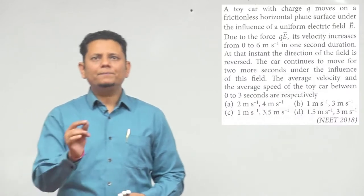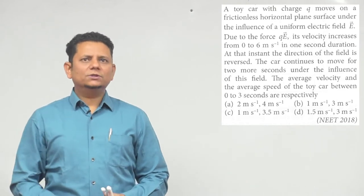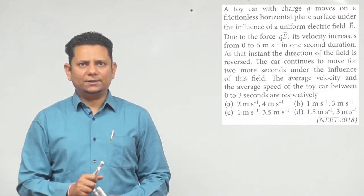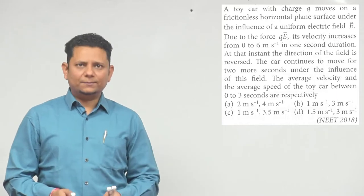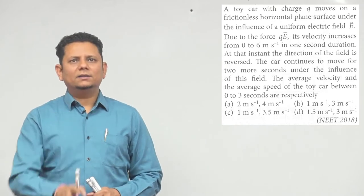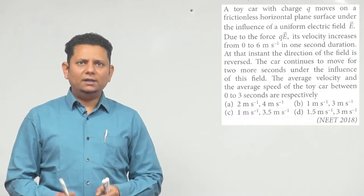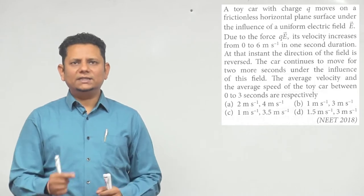Next question, 2018. Question says a toy car with charge q moves on a frictionless horizontal plane surface under the influence of a uniform electric field E. Due to the force qE, its velocity increases from 0 to 6 meters per second in 1 second duration. At that instance, the direction of electric field is reversed. The car continues to move for two more seconds under the influence of this field. We have to tell the average velocity and average speed of the toy car between 0 to 3 seconds respectively.